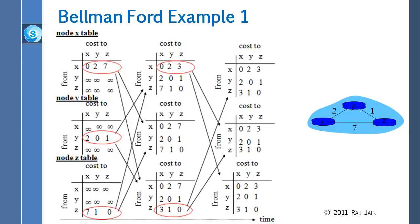Student question: is there a difference in efficiency between Bellman-Ford and Dijkstra? The problem with the distance vector is more about how long it takes to settle — it could take many cycles before it converges, and that's the problem.